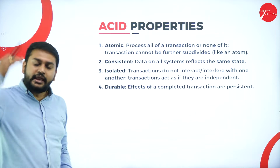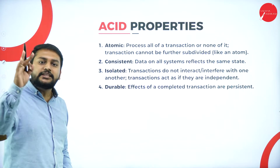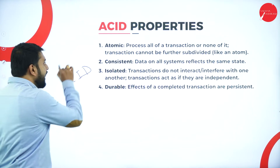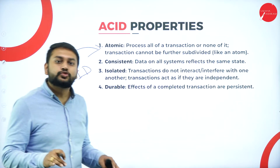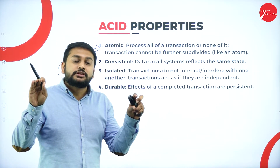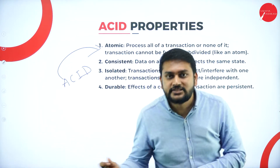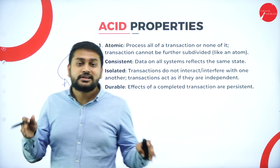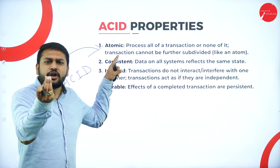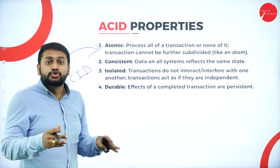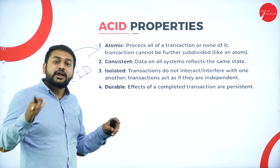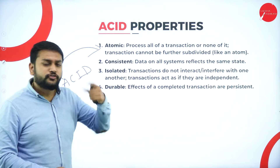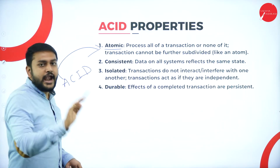Moving forward to the ACID property — any transaction should satisfy this. The 'A' stands for Atomic. Atomic means I should not be able to divide that transaction into sub-transactions. It should be the last level — the smallest unit. I cannot further divide that transaction into any other transaction. That is what atomic means.